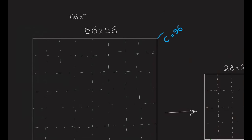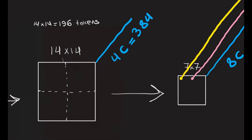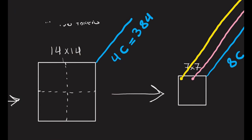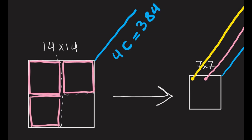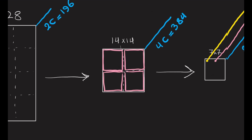For stage one at 56×56, we would need 3,136 tokens, which is computationally expensive. Instead of considering each pixel as a token, we divide the image into 7×7 windows. Each window has 49 tokens, and the tokens between different windows are independent from each other.